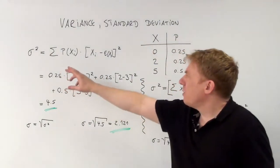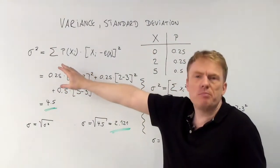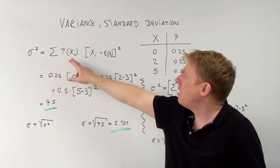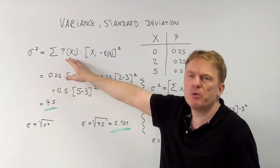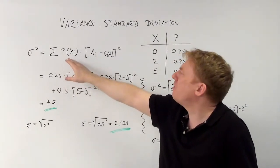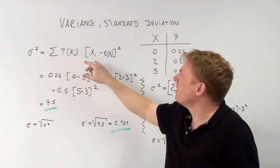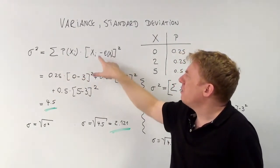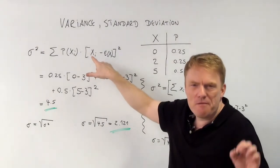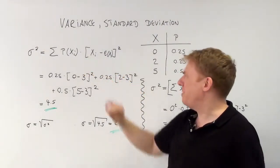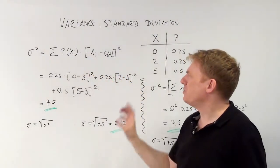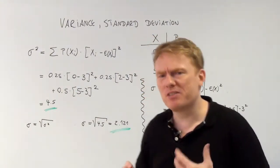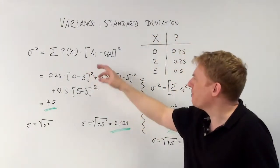Now the variance can be computed with this formula: the sum of different products — the probability of a given value times the square of the difference of that value and the expected value. It seems very complicated, but it's not that complicated, though not easy either.